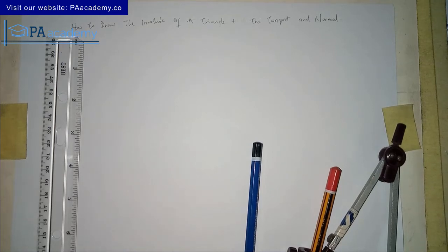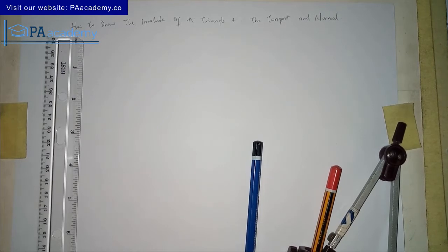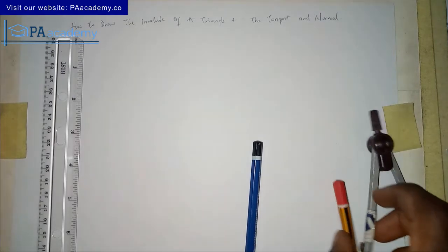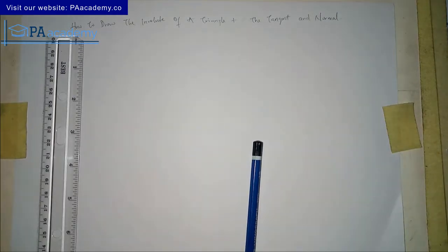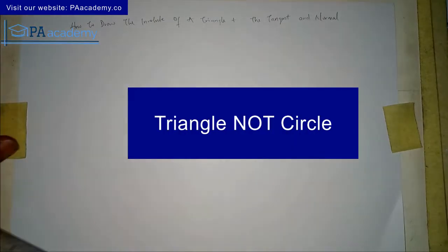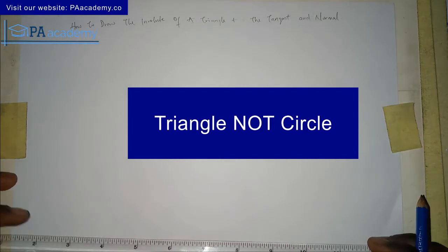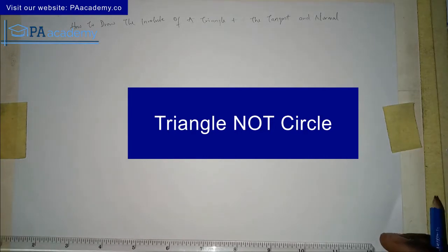Hello everyone and welcome to PE Academy. In this video I'm going to be showing you how to draw the involute of a triangle, plus a tangent and normal. So if you are asked to draw the involute of a triangle, on that involute you have to indicate the tangent and normal. That's what I'm going to be putting you through in this video.